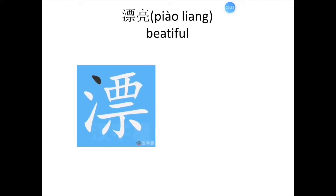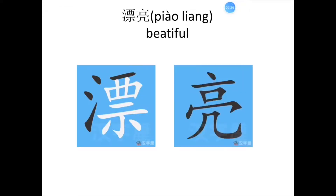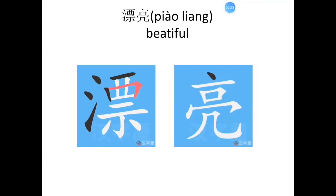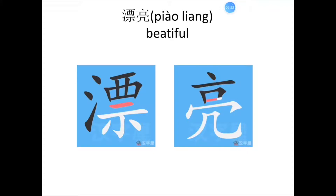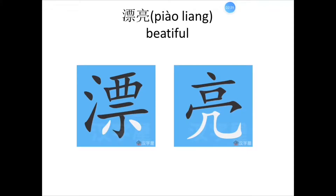Now let's see how to write 亮. Stroke count for 亮: 1, 2, 3, 4, 5, 6, 7, 8, 9.